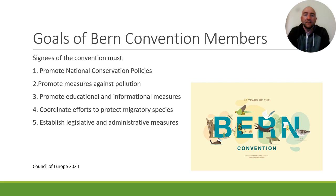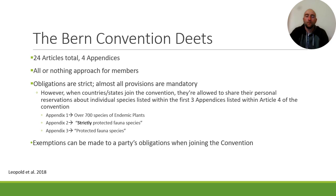Straight from the horse's mouth, these are the five basic tenets that the Council of Europe would like all Bern Convention members to uphold: first, to promote national conservation policies; second, to promote policies and measures against pollution; third, to promote educational and informational measures; fourth, to coordinate efforts to protect migratory species; and fifth, to establish legislative and administrative measures.